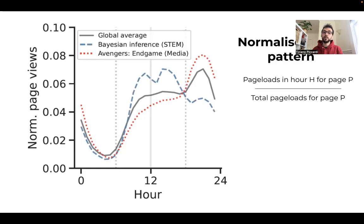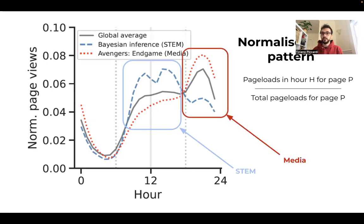However, when we look at the pattern of individual articles, these patterns get more interesting. For example, in this plot, we see the daily pattern of one article about STEM, with higher activity than average during the day, while an article about media, a movie in this case, with a reverse pattern, peaking during the evening.